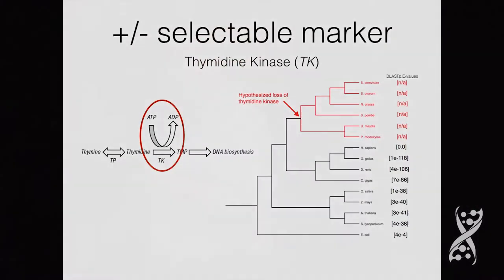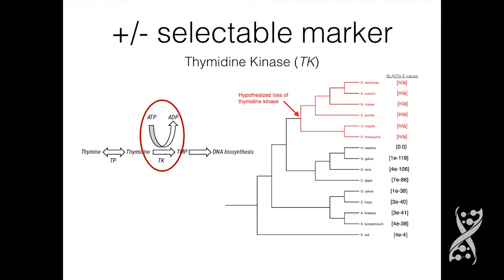I went about tackling the first part, the positive and negative selectable marker. The gene I chose to pursue was thymidine kinase. Its gene activity is pretty simple — it functions in nucleotide salvage to phosphorylate the nucleoside thymidine, which can then be used in DNA synthesis. The interesting part is that all fungal organisms lack that gene. It appears this was lost sometime shortly after the common fungal ancestor and the common animal ancestor split off — a very long time ago.